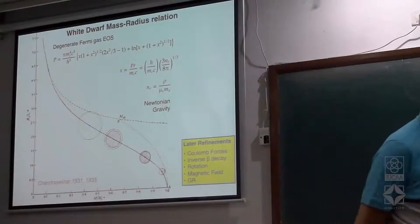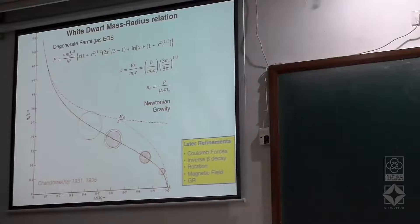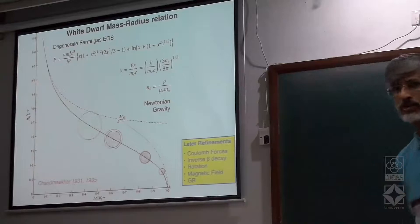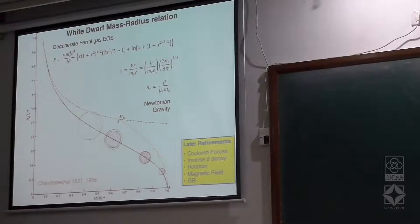A student asks: for white dwarfs with helium, which has two electrons and four nucleons, mu_e equals two. For heavier elements, A over Z is almost always equal to two, because neutrons and protons are approximately equal in number for stable nuclei — so mu_e comes out as two.